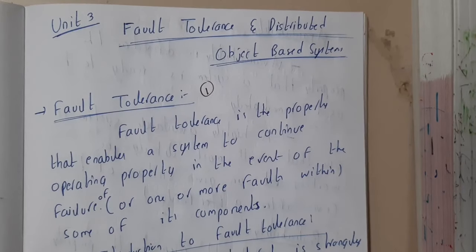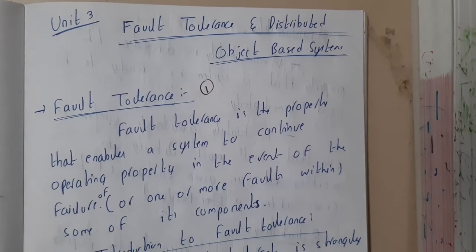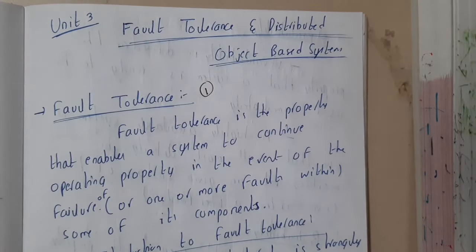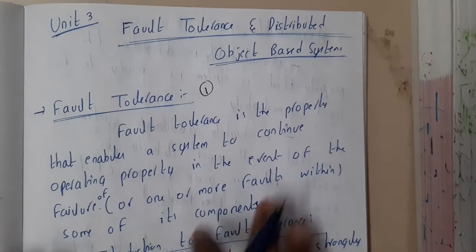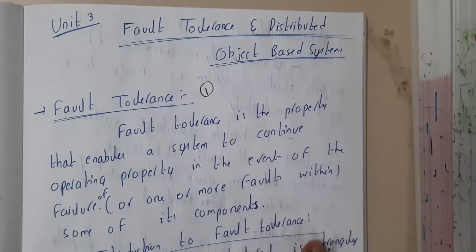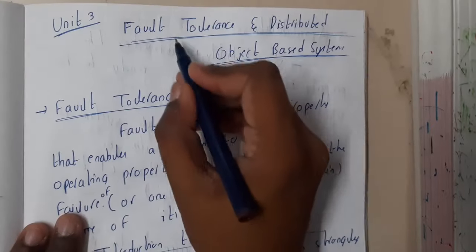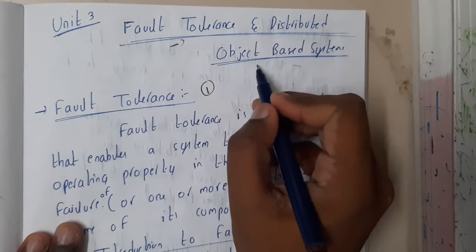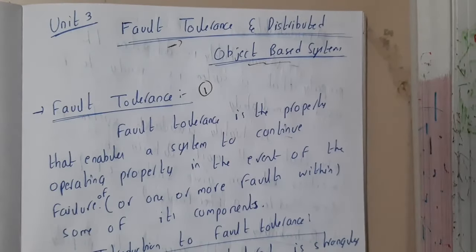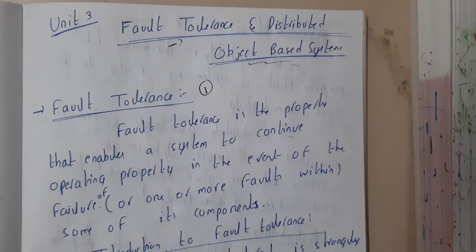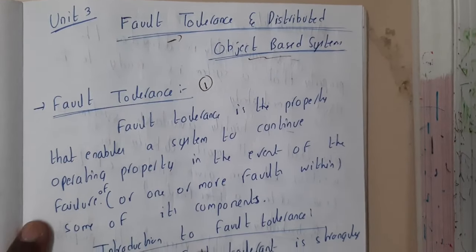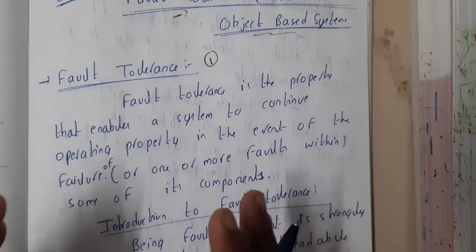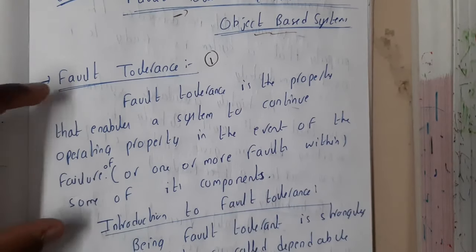Hello guys, we are back with our next lecture. In this lecture, let us go through the third unit of distributed systems. In this unit, we will be discussing the concepts of fault tolerance as well as distributed object-based systems. So first, let us start with the introduction of fault tolerance.